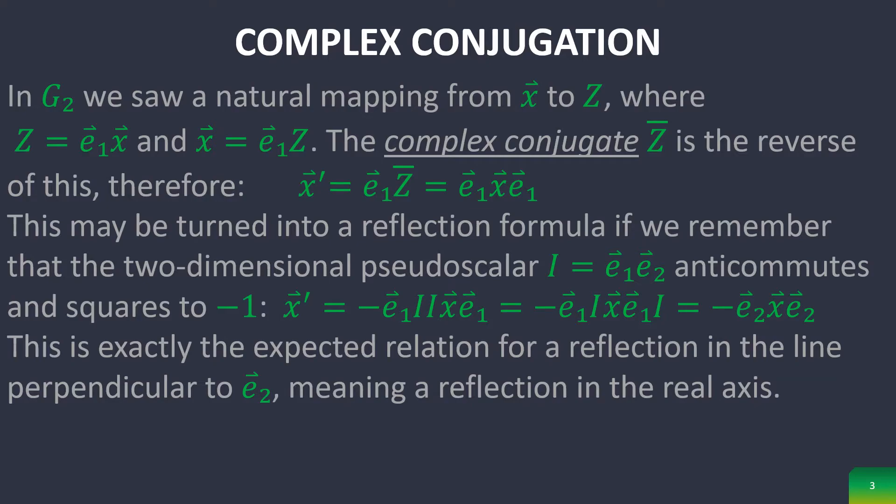This may be turned into a reflection formula if we remember that the two-dimensional pseudoscalar i, which is the bivector with the unit vectors e sub 1 and e sub 2, anticommutes and squares to negative 1, then we can see the reflection it does.